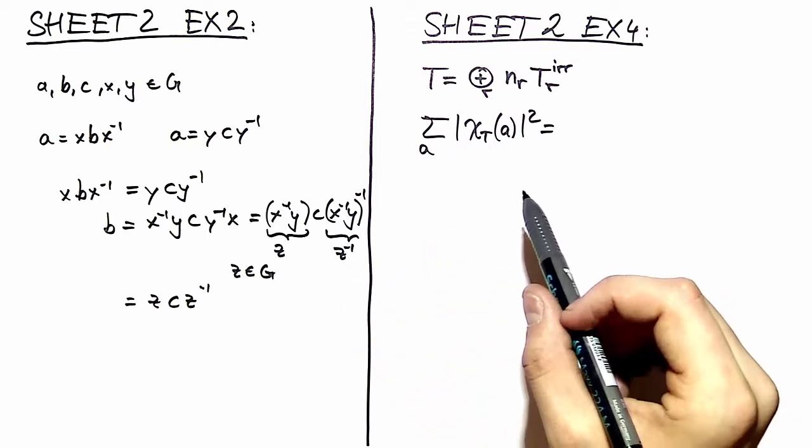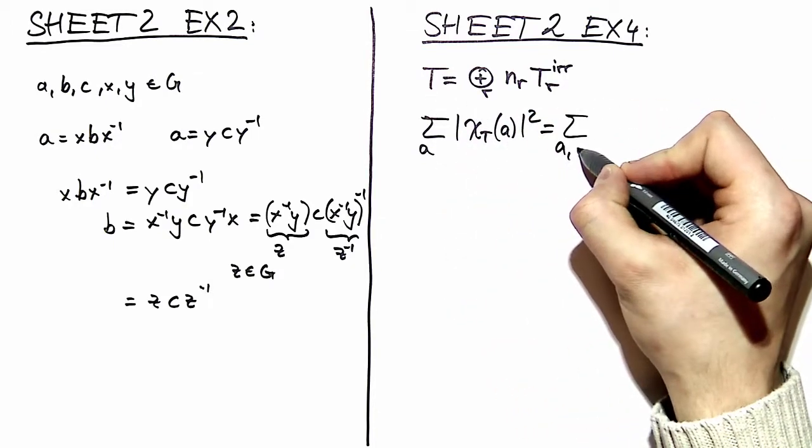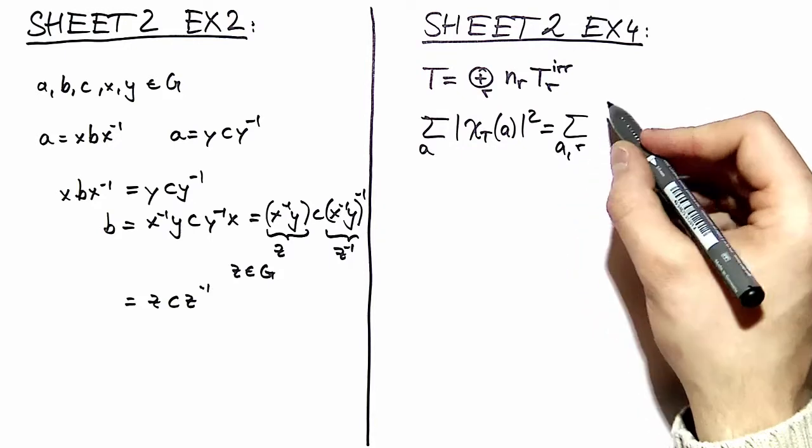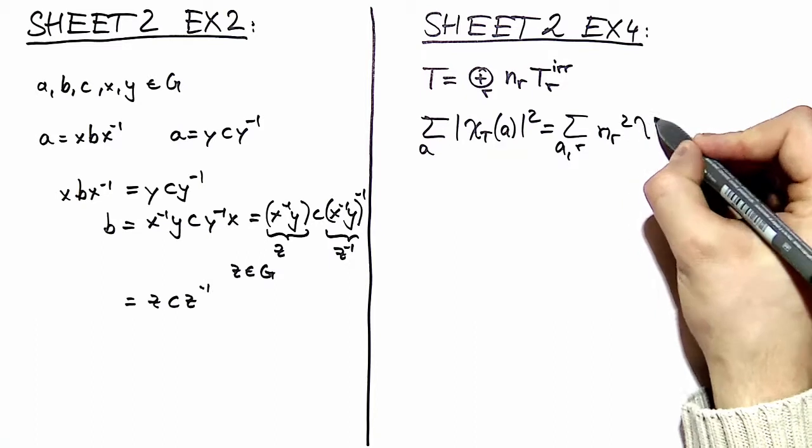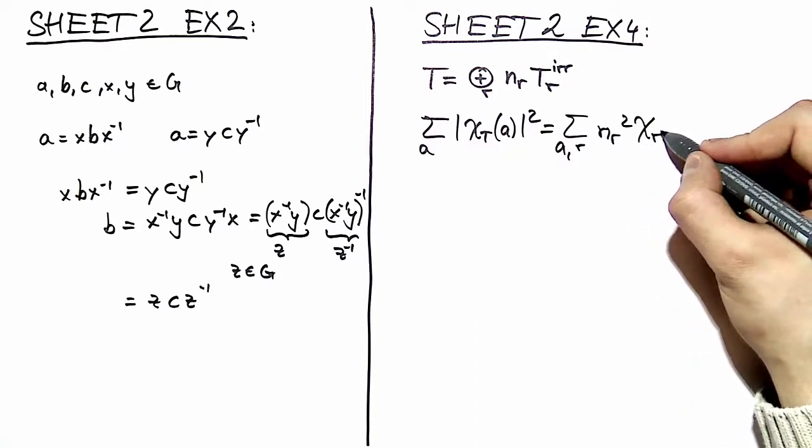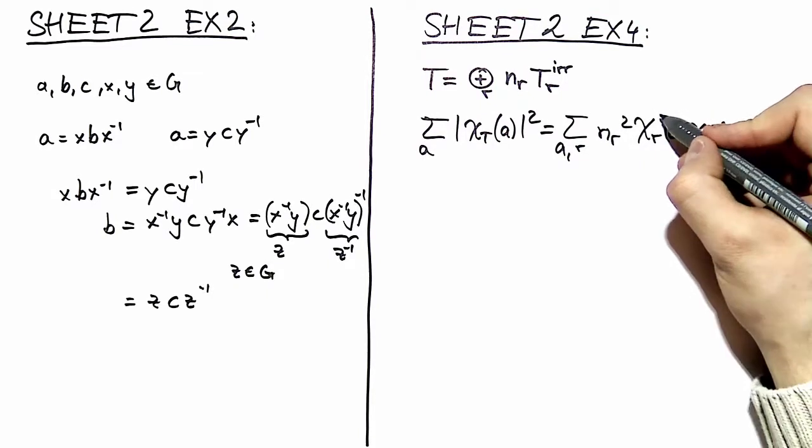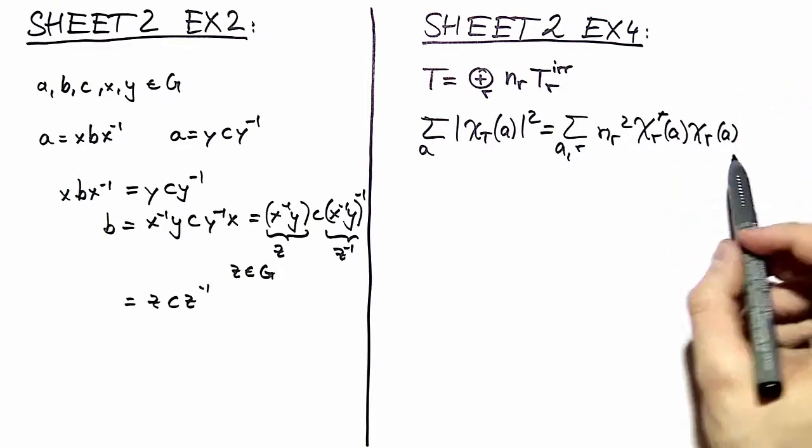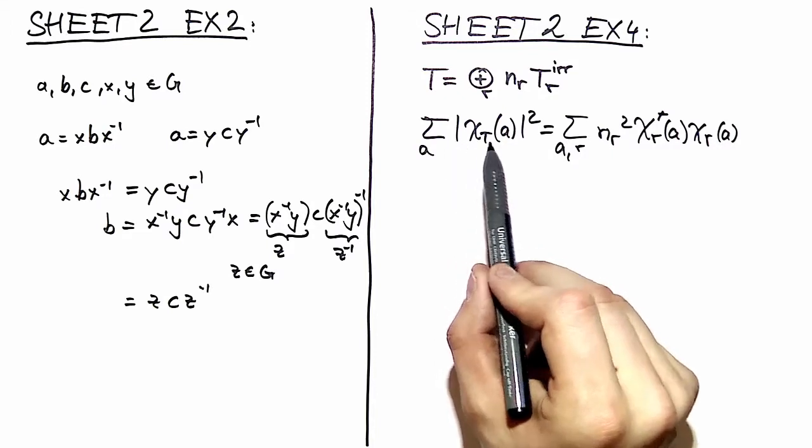Okay, you got it? It's really as easy as this looks like. We've got that sum over a and we've got that sum over r, and we have that prefactor n_r squared. We use both characters—here we've got the complex conjugate because this is a square of the absolute value.